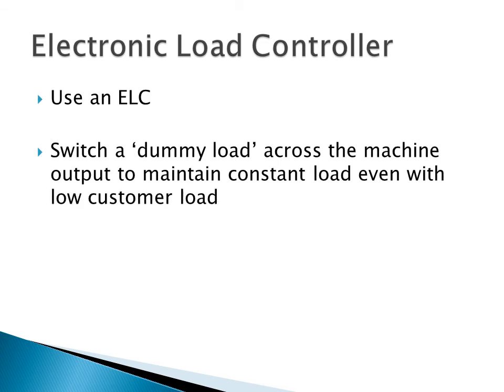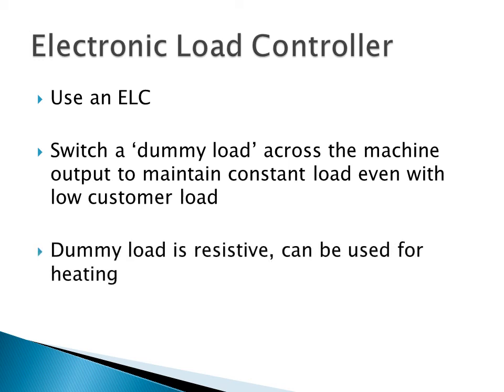We can use an electronic load controller. Basically, it switches a dummy load across the generator output to maintain a constant load, even when the customer load drops. It senses the voltage and switches across the dump load, or the dummy load, as necessary to keep the load relatively constant. And the dummy load is often resistive, and you can use it for heating water or heating an area. It could be lights, any sort of resistive load.